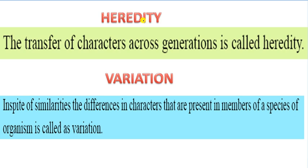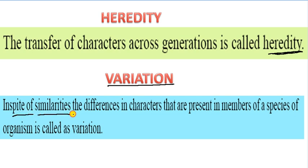First one is heredity. What is the word heredity? The transfer of characters across generations is called heredity. That is the definition of heredity, so you have to learn. Now second one is variation. What is variation? In spite of similarities, the differences in the characters that are present in members of a species of organism is called variation.